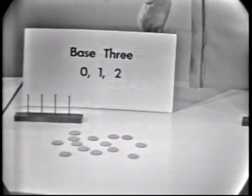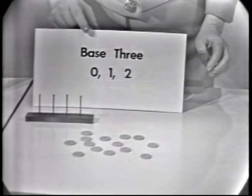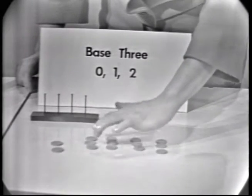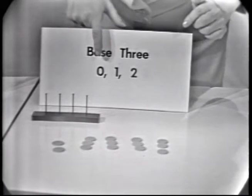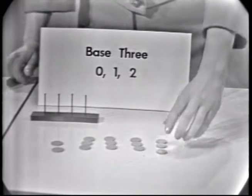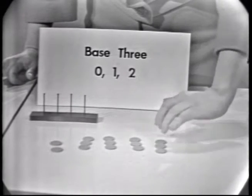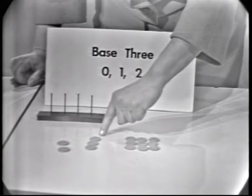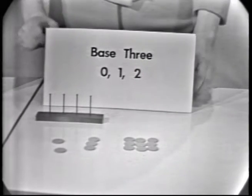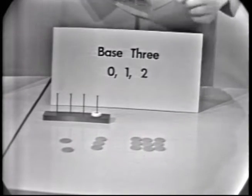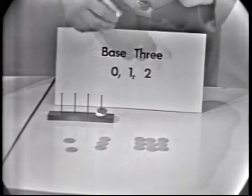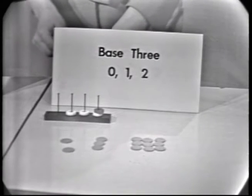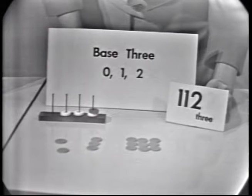Take another equivalent set. This time, let's group by using base 3 — putting these in groups of 3. Recall that all the symbols we need are 0, 1, 2. We also have 3 groups of that size, so we can group again. Now we have 1 group of 3 squared, or 9; 1 group of 3; and 2 single objects. Tallying on our abacus: 1 counter for each of the 1s, 1 counter for the group of 3, and 1 counter for 3 squared. The numeral is 1, 1, 2 — base 3.